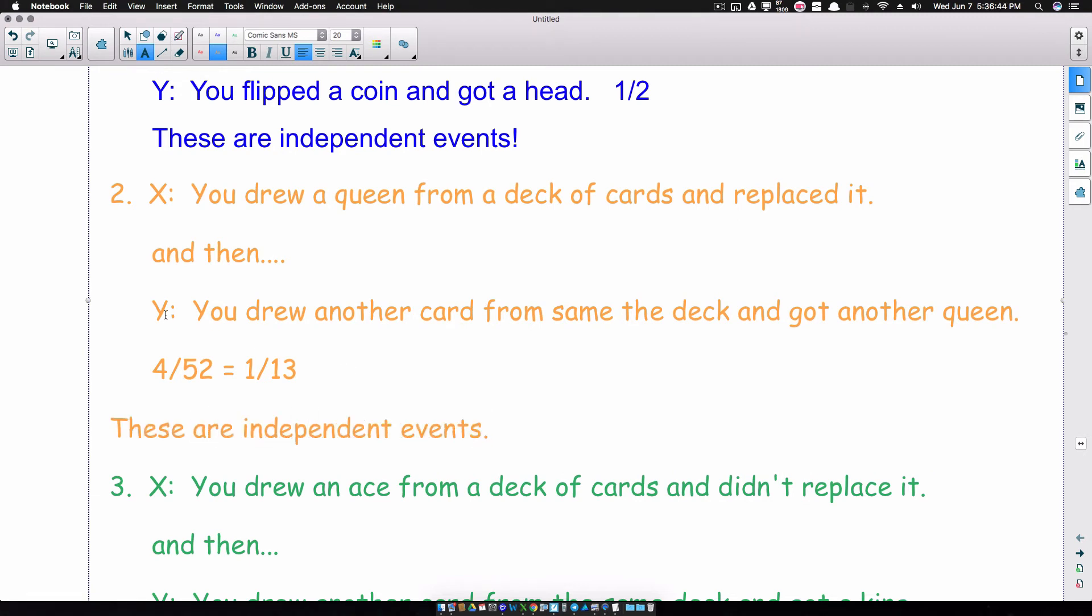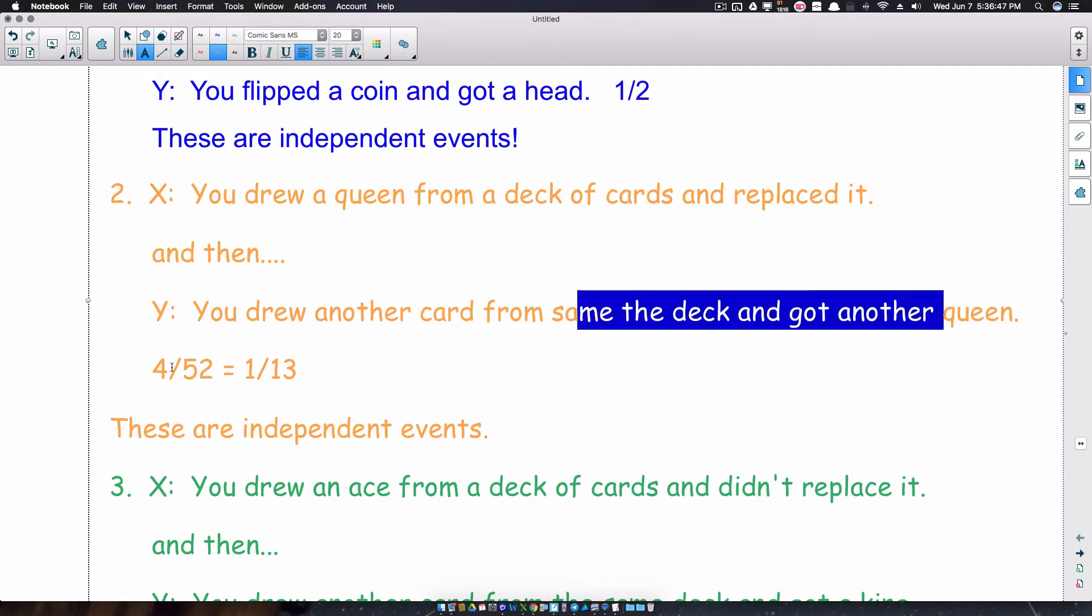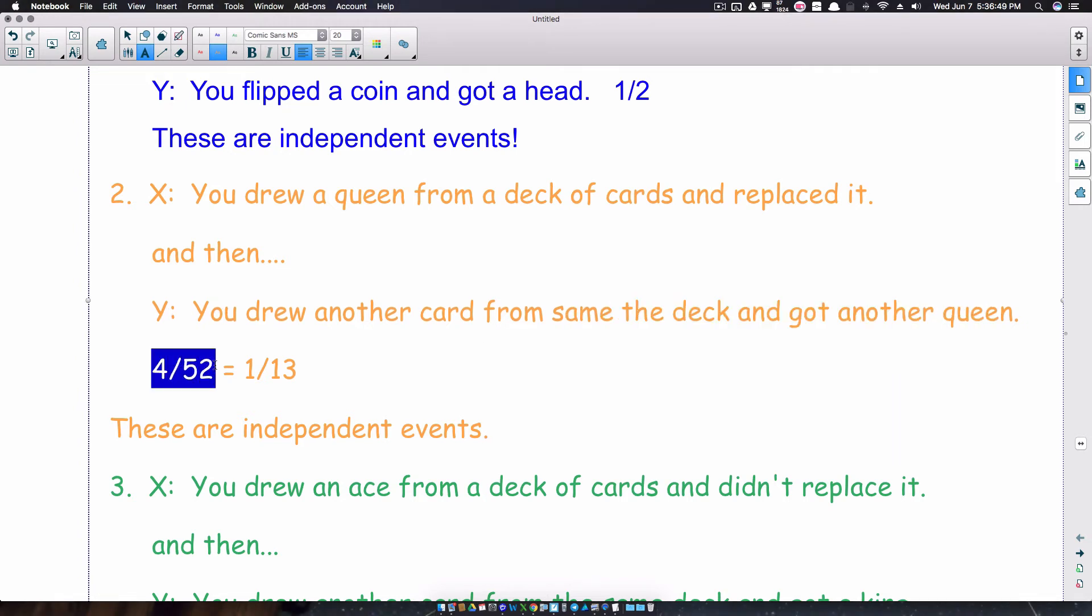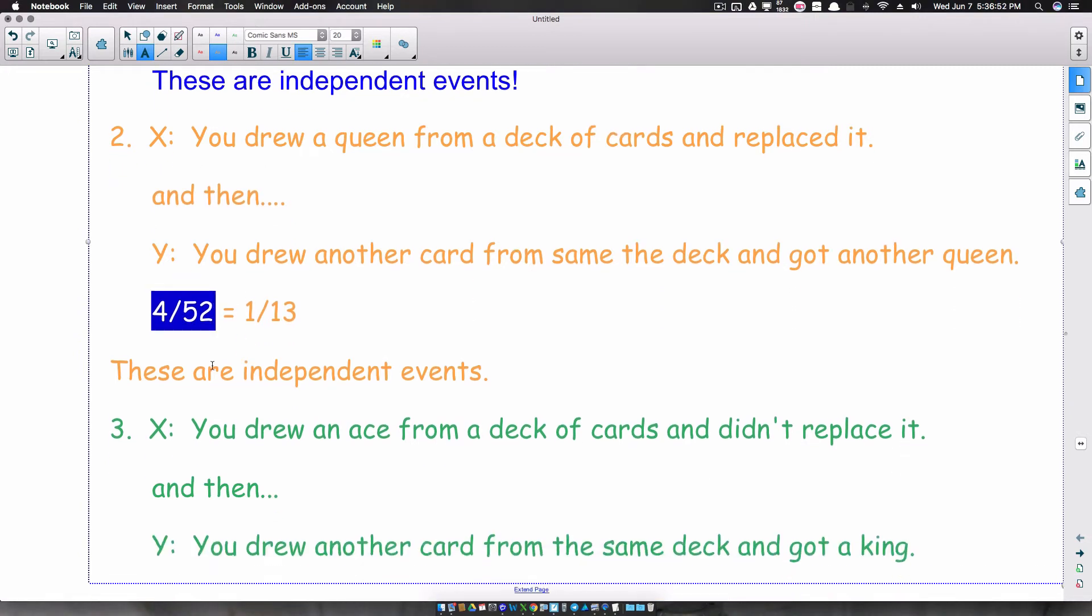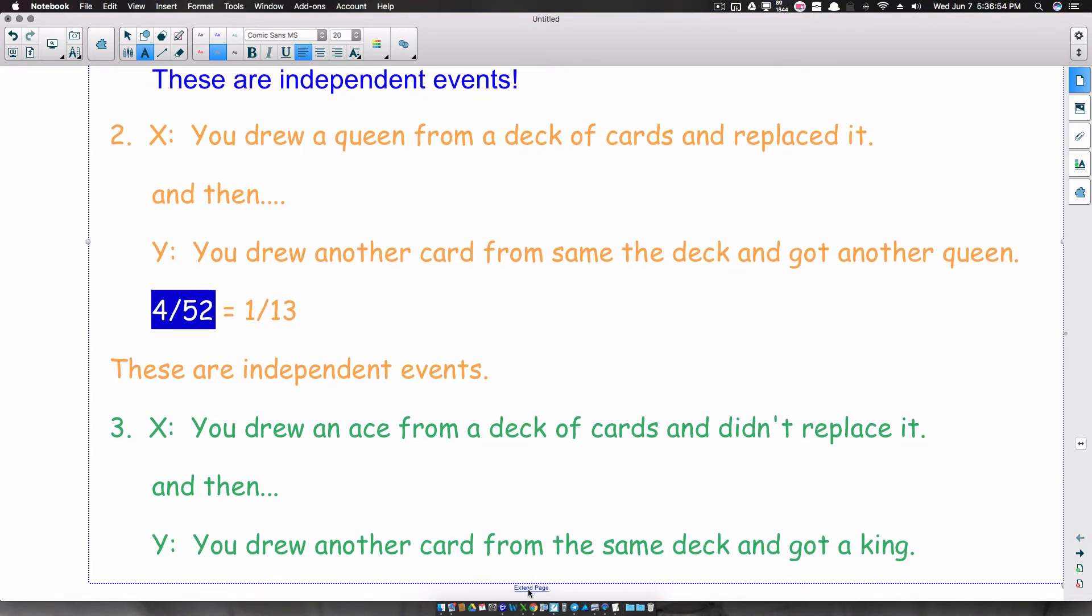Because this probability, the probability of you getting a queen down here is 4 out of 52 since we still had those 52 cards in the deck and there's still 4 queens in the deck. Now, let's look at number 3. This last one here.